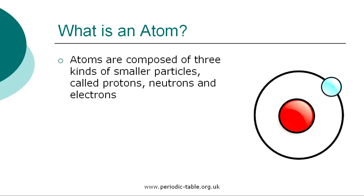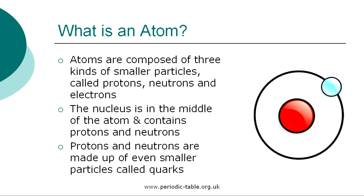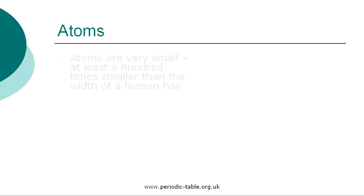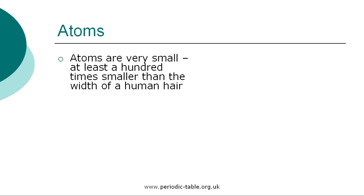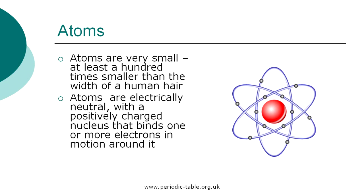These particles all have different properties. Electrons are tiny, very light particles that have a negative electrical charge. Protons are much larger and heavier than electrons and have a positive charge. Neutrons are large and heavy like protons; however, neutrons have no electrical charge. The nucleus is in the middle of the atom and contains protons and neutrons. Protons and neutrons are made up of even smaller particles called quarks. Atoms are very small — at least 100 times smaller than the width of a human hair. The exact size of the atom changes depending on the element. Atoms are electrically neutral with a positively charged nucleus that binds one or more electrons in motion around it.